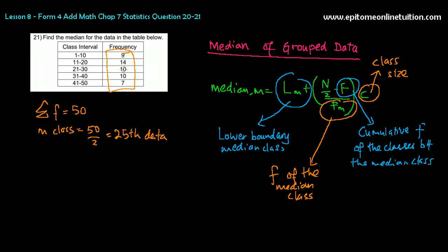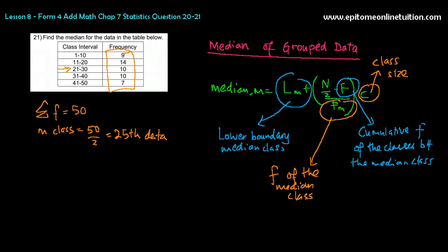So, 25th will be, so, 23 plus 10 is 33, right? So that means the 25th data is somewhere here. That's your median class, 21 to 30. So, median class, this is your median class.